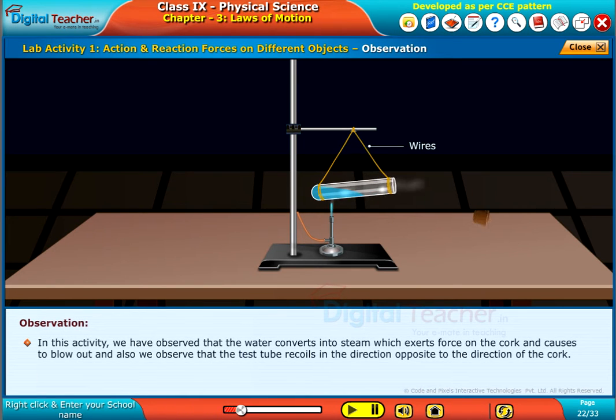In this activity, we have observed that the water converts into steam which exerts force on the cork and causes it to blow out. And also we observe that the test tube recoils in the direction opposite to the direction of the cork.